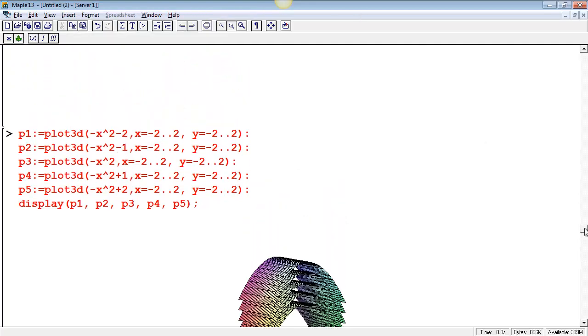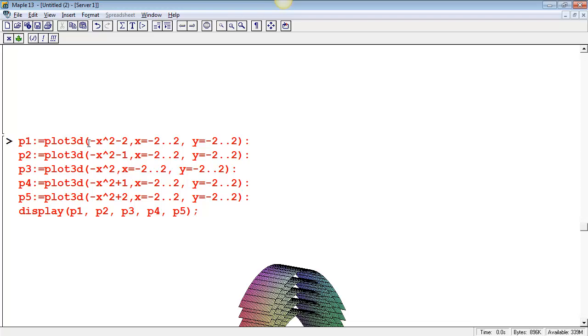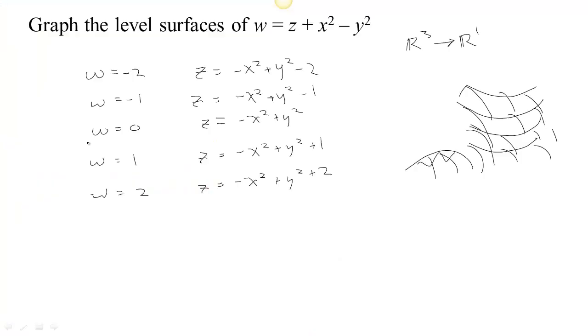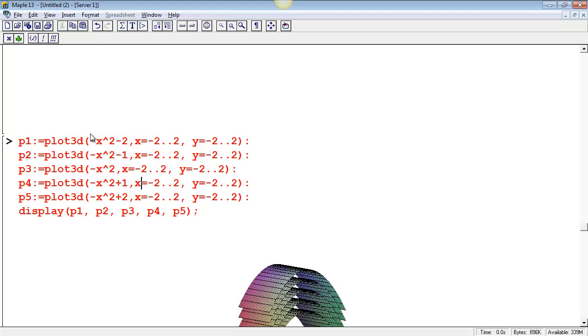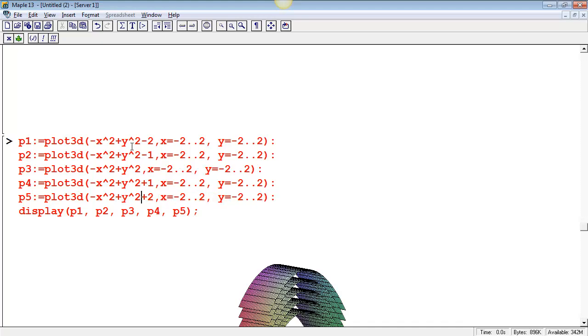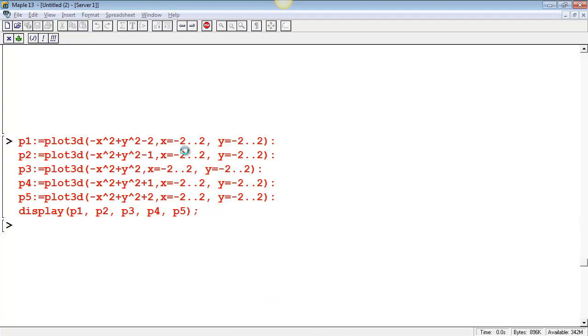We were able to solve for z, so we don't have to use implicit plot 3d. We can just use the plot 3d command. Negative x squared plus y squared, and then whatever w is. Negative x squared plus y squared minus 2, and negative x squared plus y squared minus 1, and negative x squared plus y squared with 0, and negative x squared plus y squared plus 1, and negative x squared plus y squared plus 2, and let's just display all of our plots together.